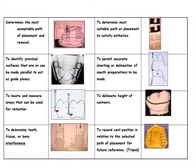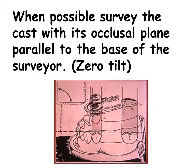This chart provides a summary of the purposes of surveying. The zero tilt position is convenient for several reasons. With proper design, axial forces are distributed down the long axis, and seating under biting force is less likely to result in tooth trauma. Such an orientation is most helpful for both the operator and the patient.